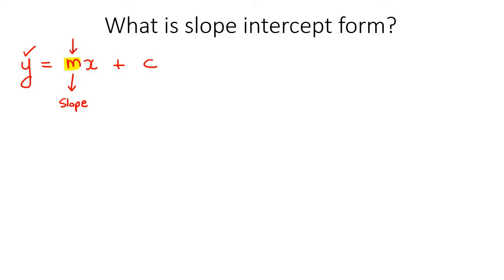And then this one over here, which is the number that's by itself, is going to be called the y-intercept. Now, what's very important is that the y value is completely by itself. Can you see that?